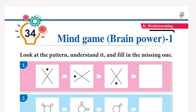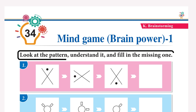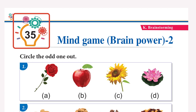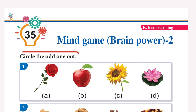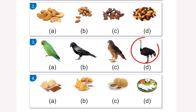Chapter 34: Mind Game Brain Power 1. Look at the pattern, understand it, and fill in the missing one — do it yourself. Chapter 35: Mind Game Brain Power 2. Circle the odd one out: circle the apple, circle the cloves, circle the ostrich, circle the idli sambar.